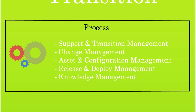The third process is Service Asset and Configuration Management, which maintains information about configuration items required to deliver an IT service, including their relationships. The fourth is Release and Deployment Management, which helps to plan, schedule, and control the movement of releases to test and live environments. The fifth is Knowledge Management, which assists to gather, analyze, store, and share knowledge and information within an organization. Its primary purpose is to improve efficiency by reducing the need to rediscover knowledge.